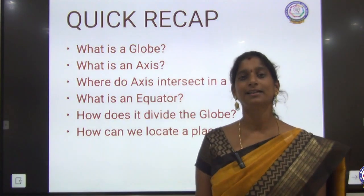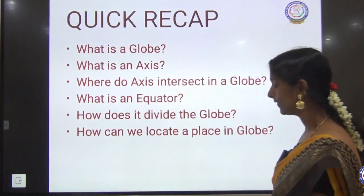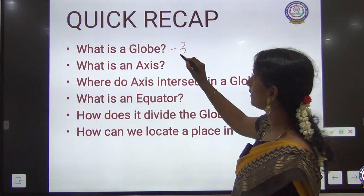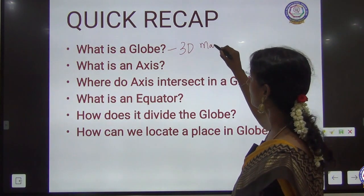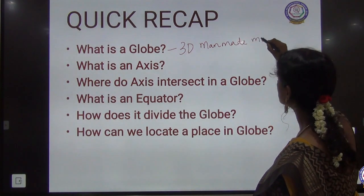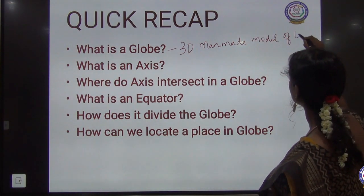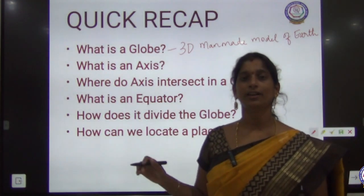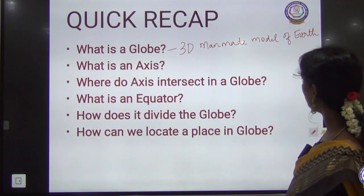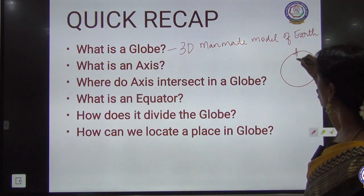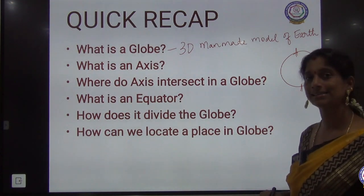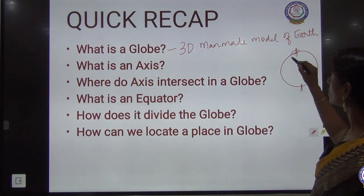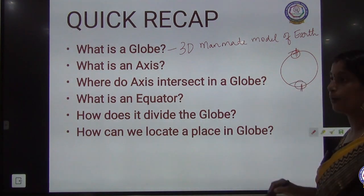First, we will revise what we have seen. A globe is a three-dimensional man-made model of the Earth. Then, what is an axis? In a globe, the topmost point and the bottommost point is called the axis. The axis intersects at the North Pole and South Pole of the globe.